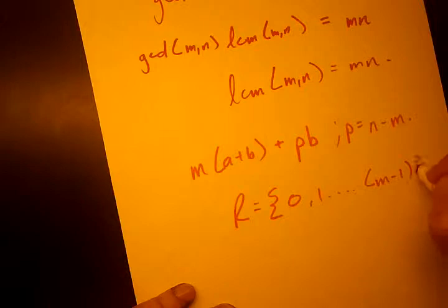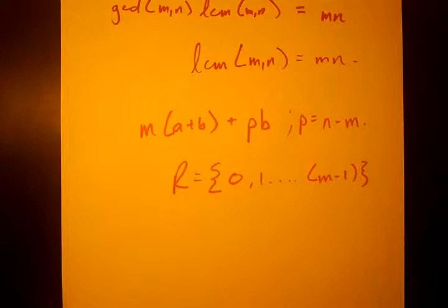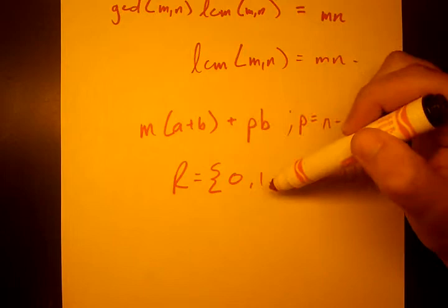Only if it gives all those remainders can we say that we can find the Frobenius number for it. Otherwise, if there's even one of these remainders missing, then for every number of that kind, so let's go to our 5K example.